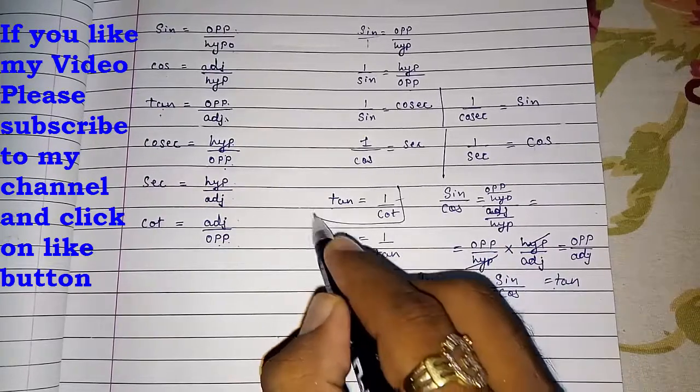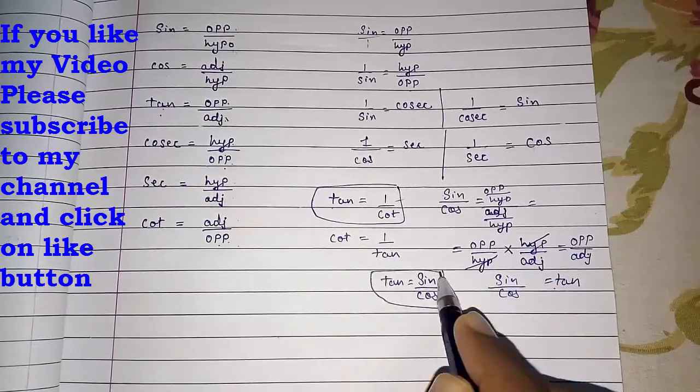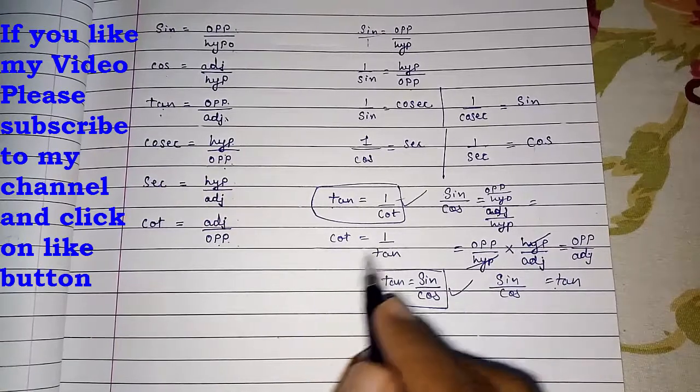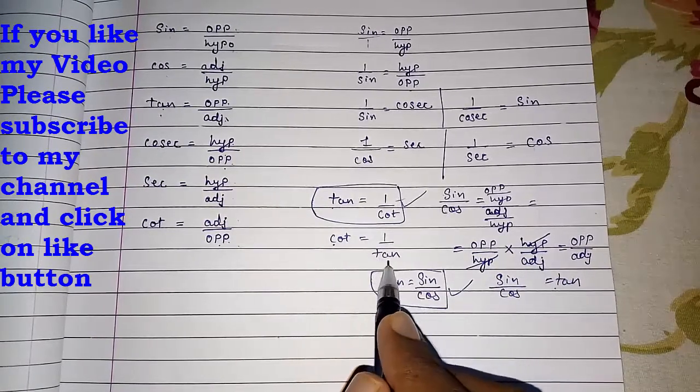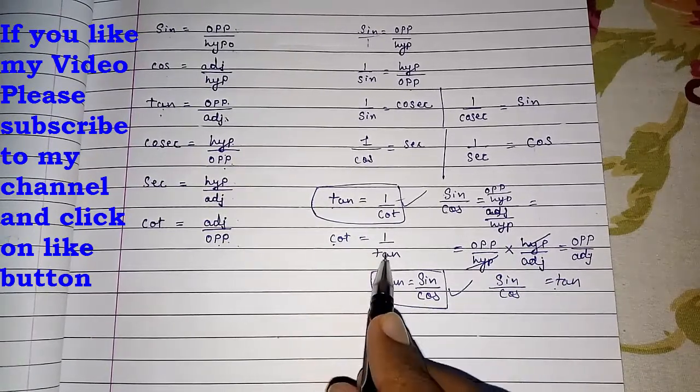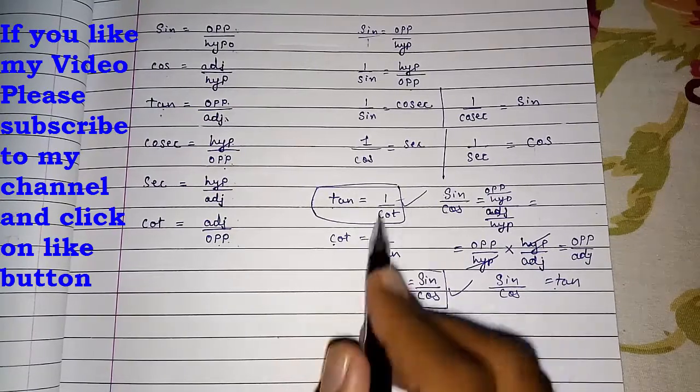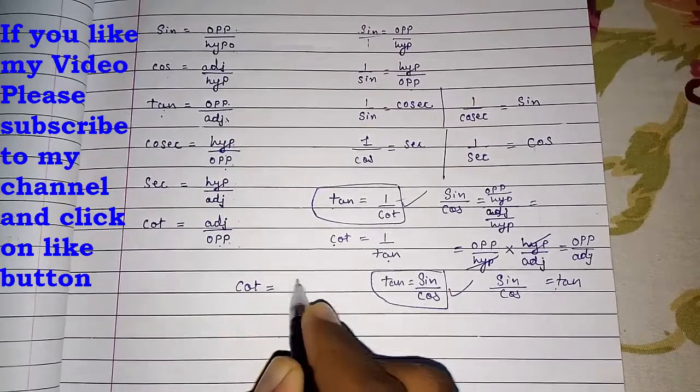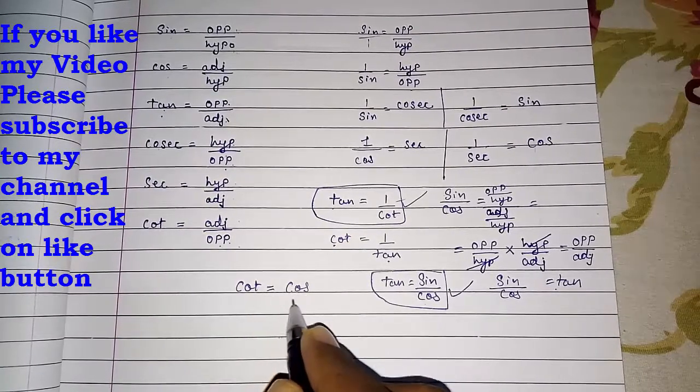This is the first value for tan. This is the second value for tan. Now for cot also this is the first value that cot is equal to one by tan. And if I put this sin by cos here and I will do reciprocal, so for cot also I will get cos by sin.